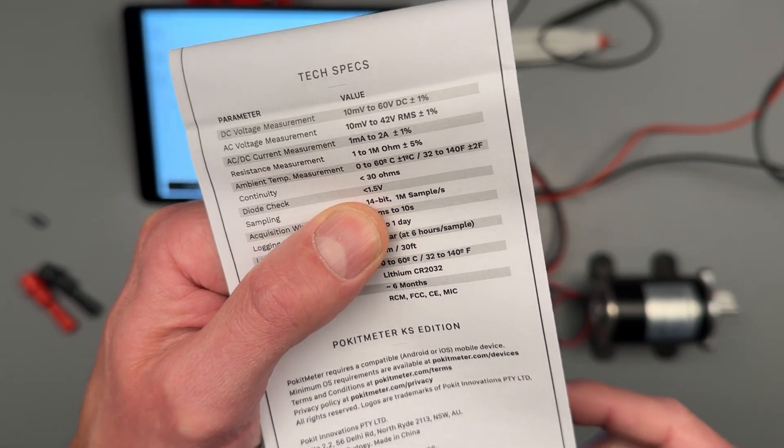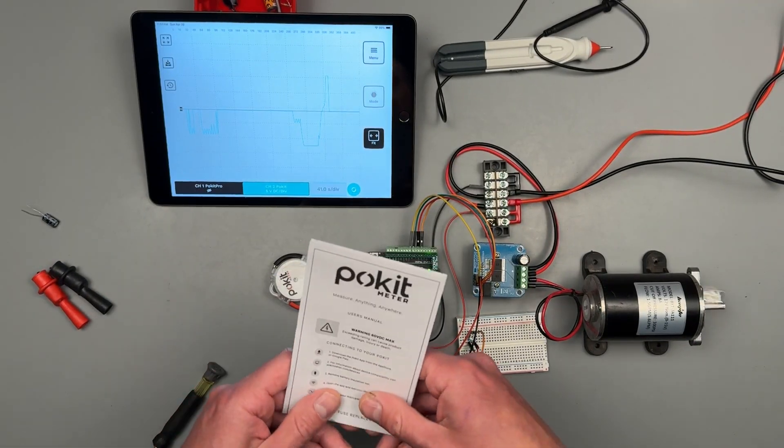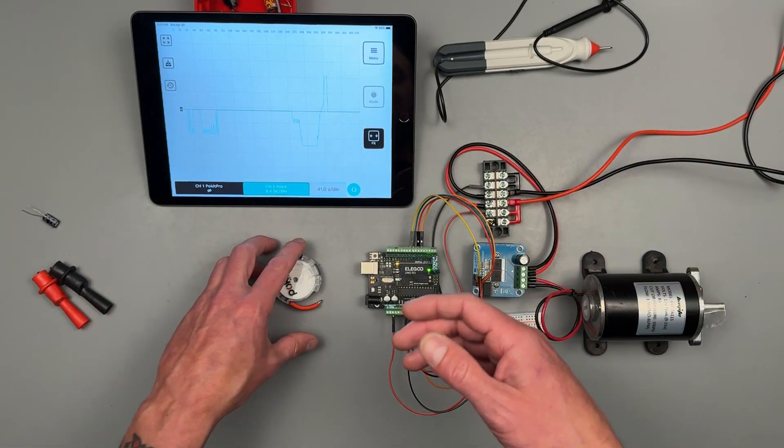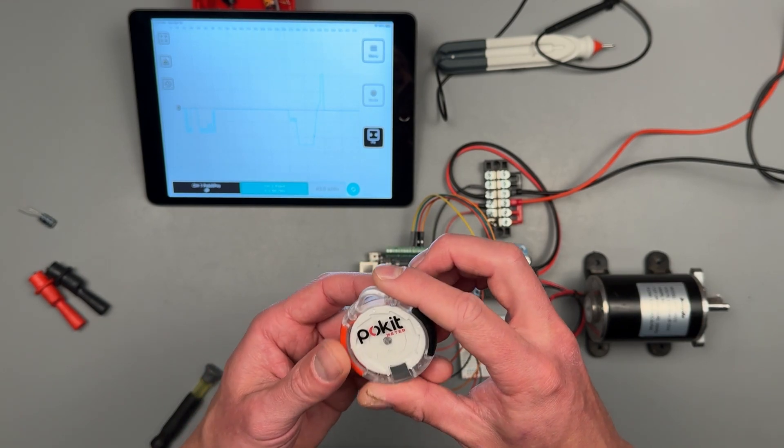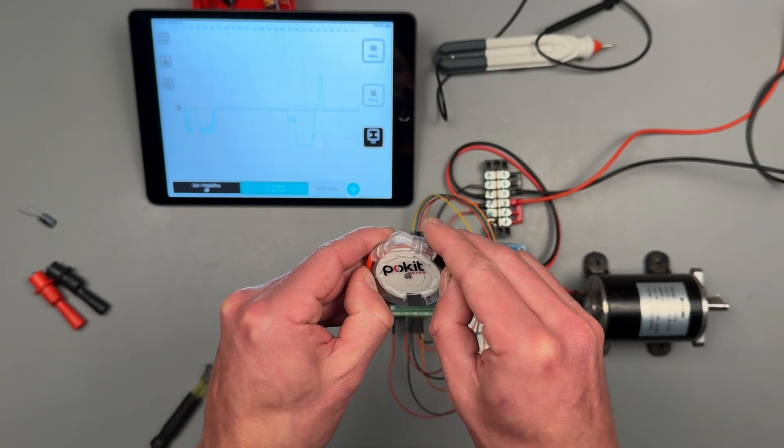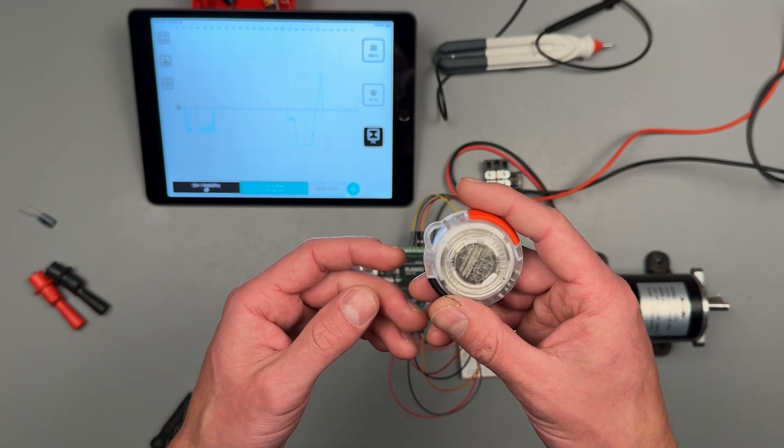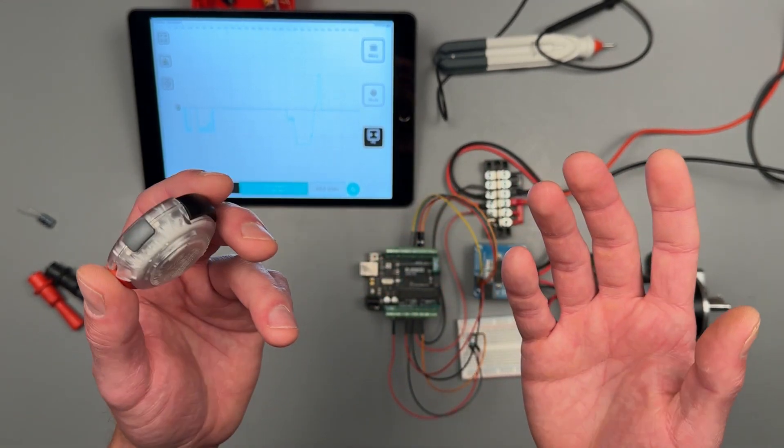Diode check less than 1.5 volts - that's all it says. So if we're getting a one, I assume that means it's good. Please like, subscribe, share the video, ring the bell, do what you gotta do - helps me make more content like this. I hope this was helpful to everybody. Thank you for joining me another adventure in the garage and I'll check you on the next one.